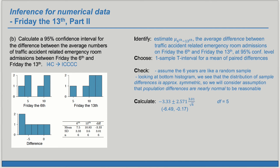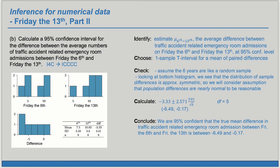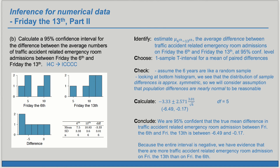Now we're ready for our conclusion. We're 95% confident that the true mean difference in traffic accident-related emergency room admissions between Friday the 6th and Friday the 13th is between negative 6.49 and negative 0.17. We notice the entire interval is negative. Since we took the difference as 6th minus 13th, a negative interval indicates that Friday the 13th values are larger. So we have evidence that there are more traffic accident-related emergency room admissions on Friday the 13th than on Friday the 6th, at the 95% confidence level.